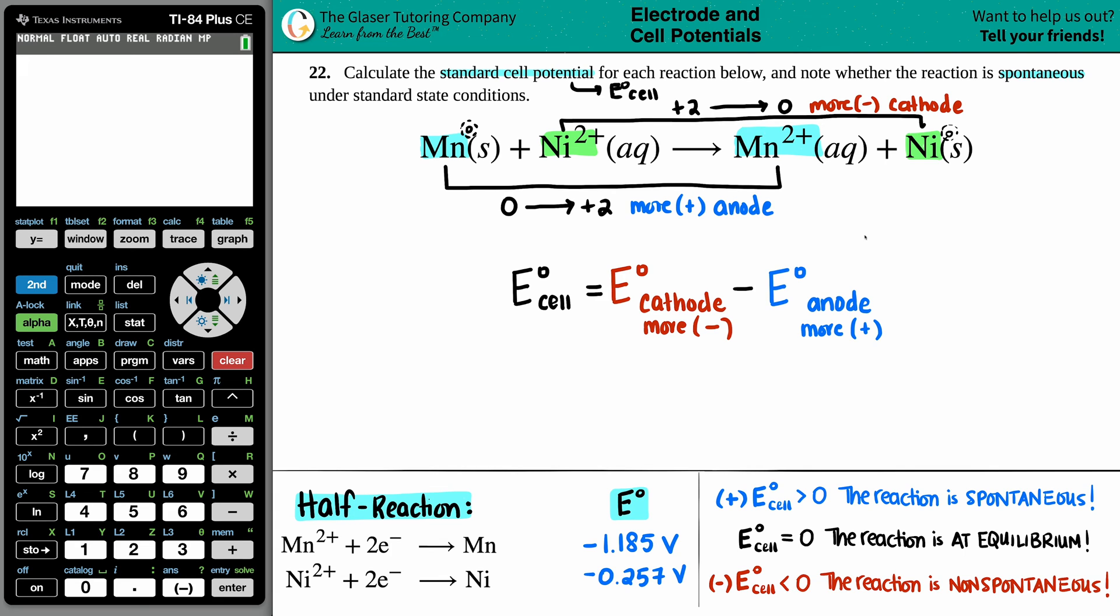So great. I know that the nickel is going to be my cathode and the manganese, the Mn is going to be the anode. Now they didn't necessarily give me cell potentials for these elements, but that's why I went to the back of the textbook to find them. And that's exactly what we had to do.